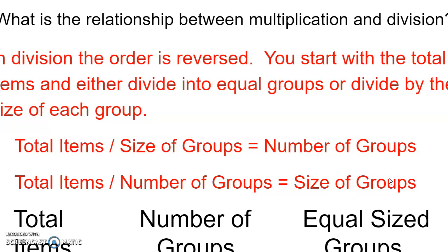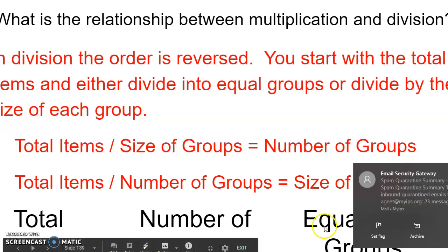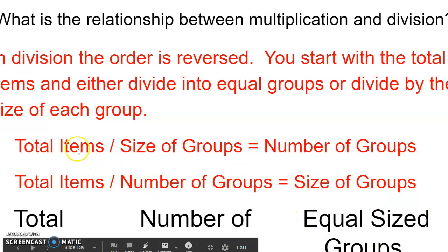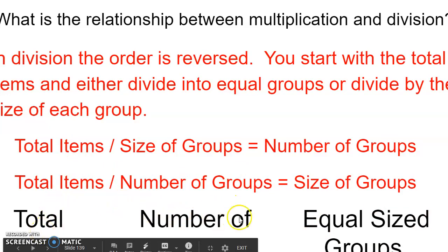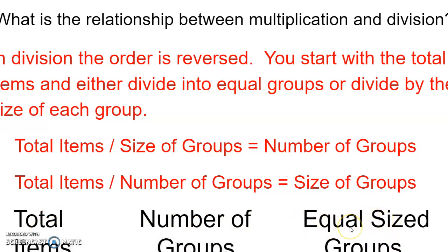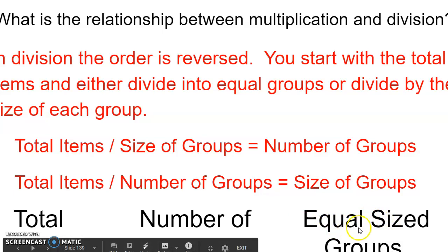But in division, the order is reversed. You already know the total. So you start with the total and divide by the part that's given. If you're given the equal groups, you divide by the equal groups to find the size of the group. If you're given the size of the group, you divide by the size of the group to get the number of groups. The three parts are always going to be the same: the total number of items, the number of groups, and the equal-sized groups.